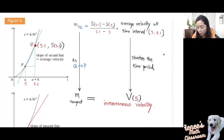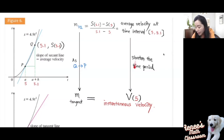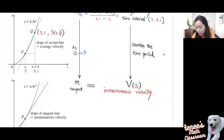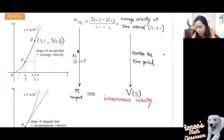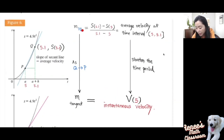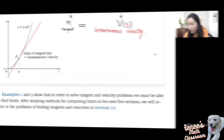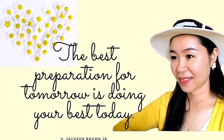As you move point Q along the curve closer and closer to point P, the time interval shortens — from 5 to 5.001, for example. As Q approaches P, the secant line gets closer and closer to the tangent line, and the slope of the secant line approaches the slope of the tangent. This is the end of section 2.1.